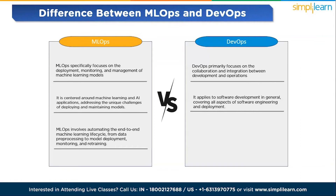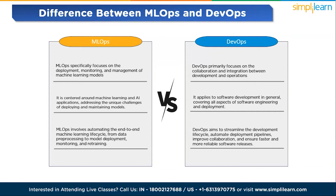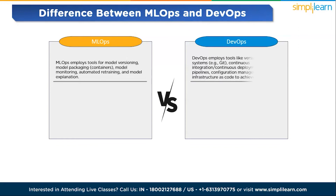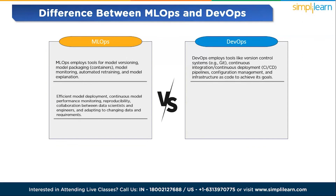Third, MLOps involves automating the end-to-end machine learning lifecycle from data pre-processing to model monitoring and retraining, while DevOps aims to streamline the deployment lifecycle, automate deployment pipelines, improve collaboration, and ensure faster and more reliable software releases. Fourth, MLOps employs tools for model versioning, model packaging, model monitoring, automated retraining, and model explainability, while DevOps employs tools like version control systems such as Git, CI/CD pipelines, configuration management, and infrastructure as code.